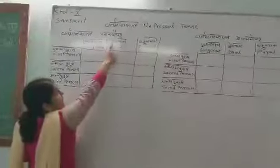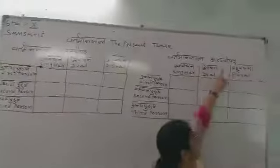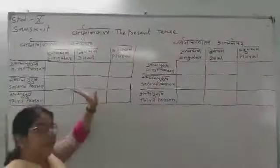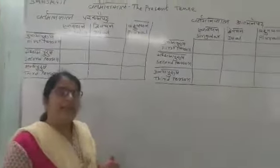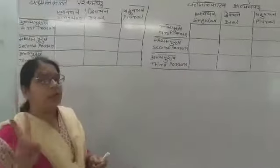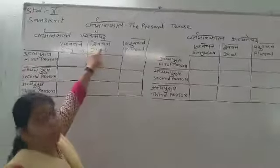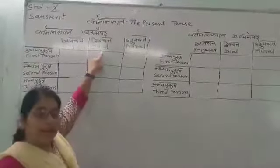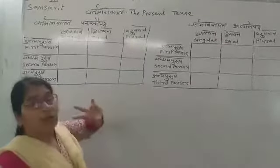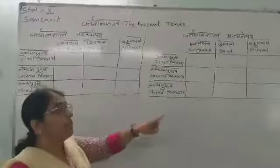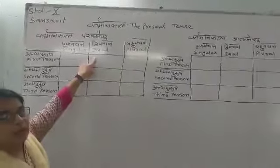I have written Vartman Kaar Parasmaipada and Vartman Kaar Atmanepada. We have learnt this in ninth standard. One thing I want to tell you is that in Gujarati, Hindi and English we have only two things — singular and plural. But in Sanskrit we have three vachan, including dual. So remember, in Sanskrit we are not having only singular and plural, but three vachan.